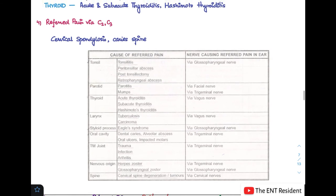This is a precise chart here which gives you all the causes and the nerves involved in each of these causes. It can involve the tonsil, parotid, thyroid, larynx, styloid process, oral cavity, TM joint, nerve origin, and spine. All of these are either via the 5th, 9th, 10th cranial nerve, or the C2, C3 cervical nerves.